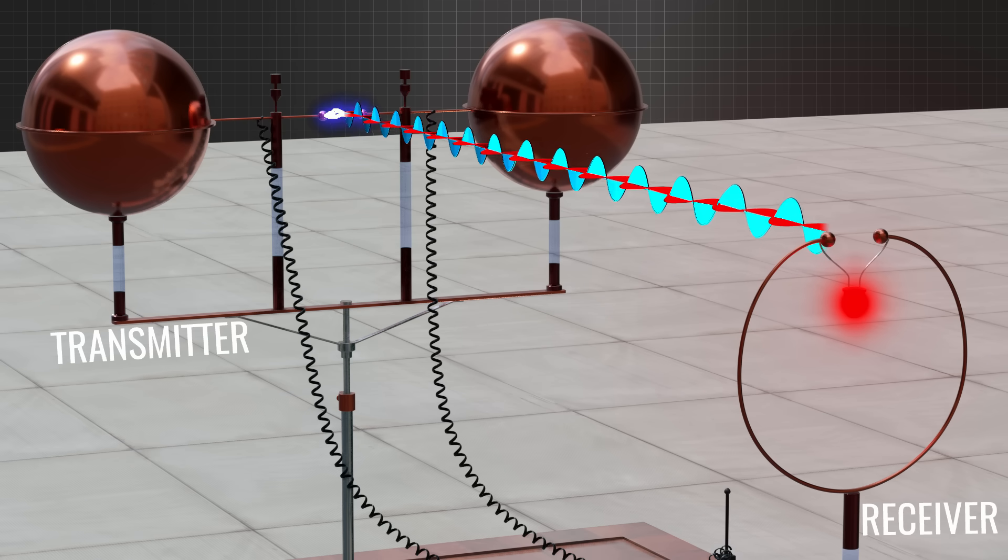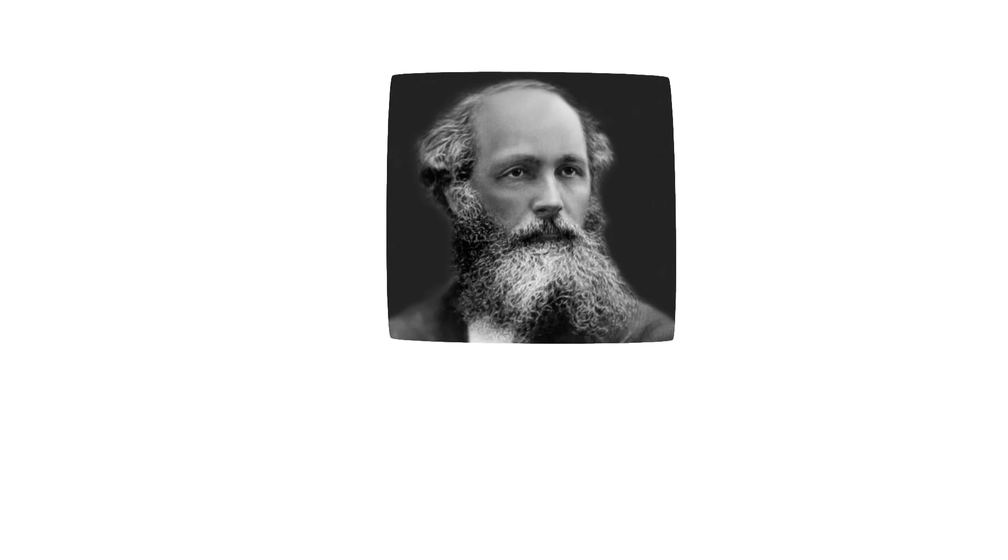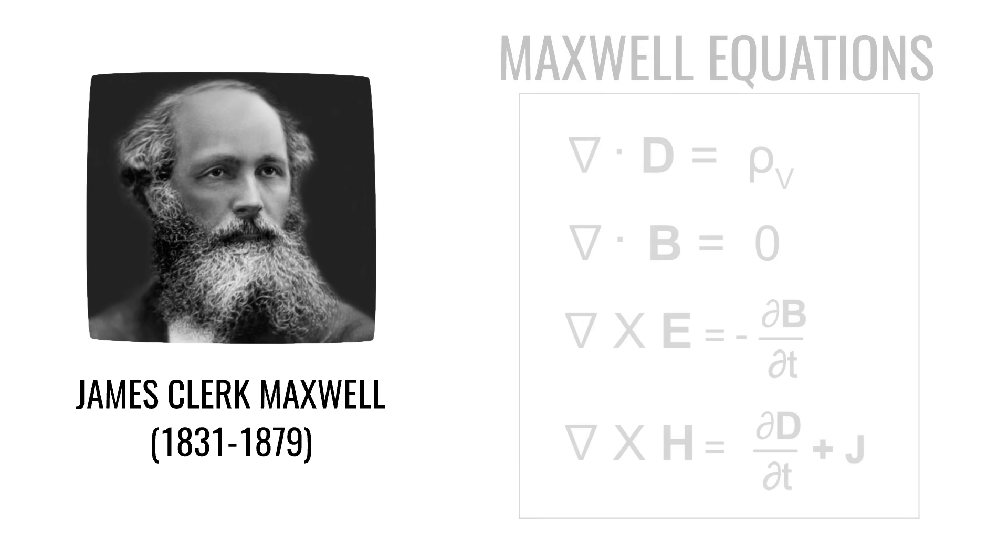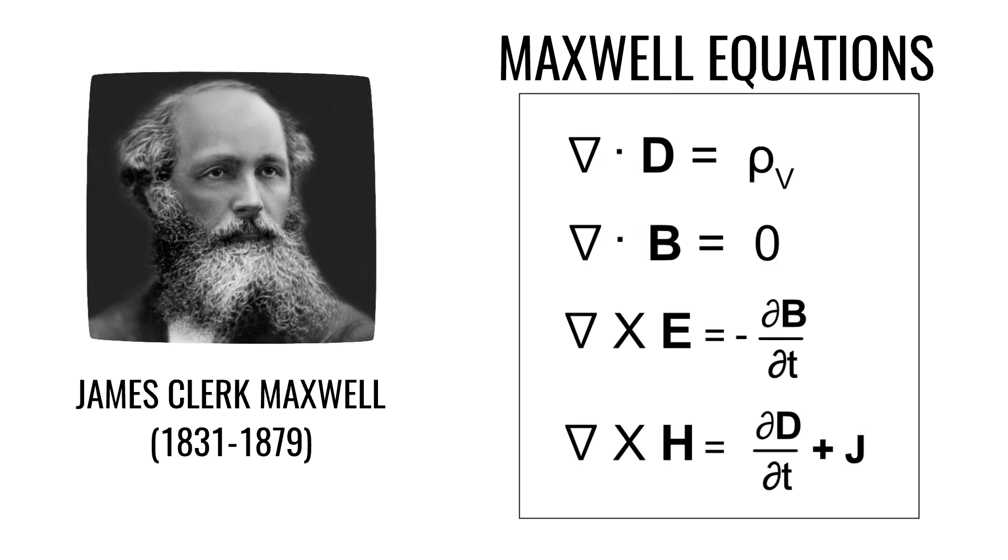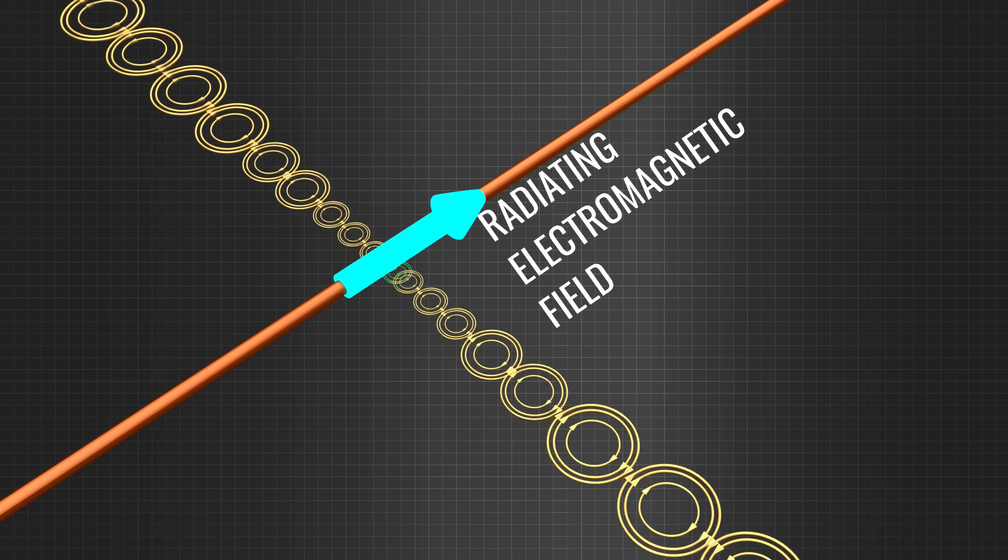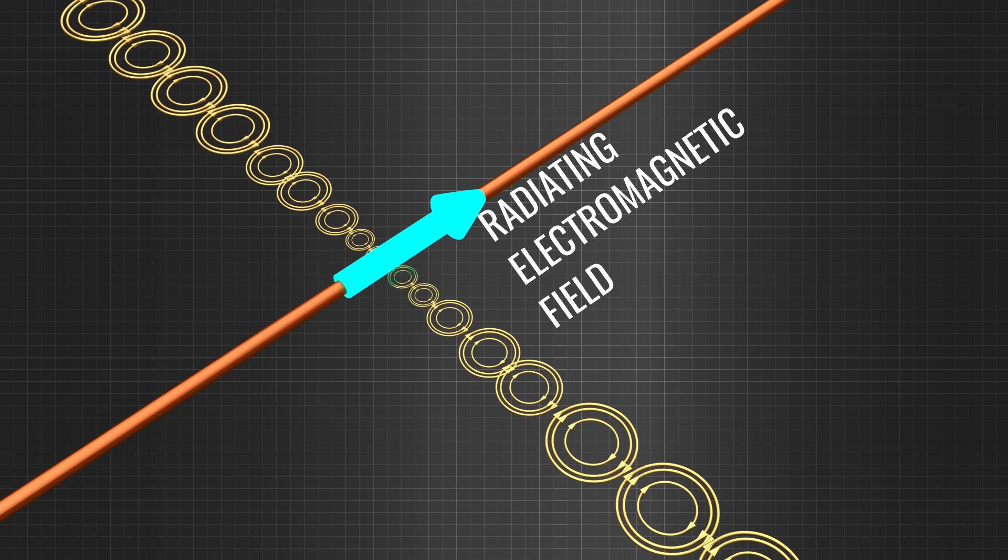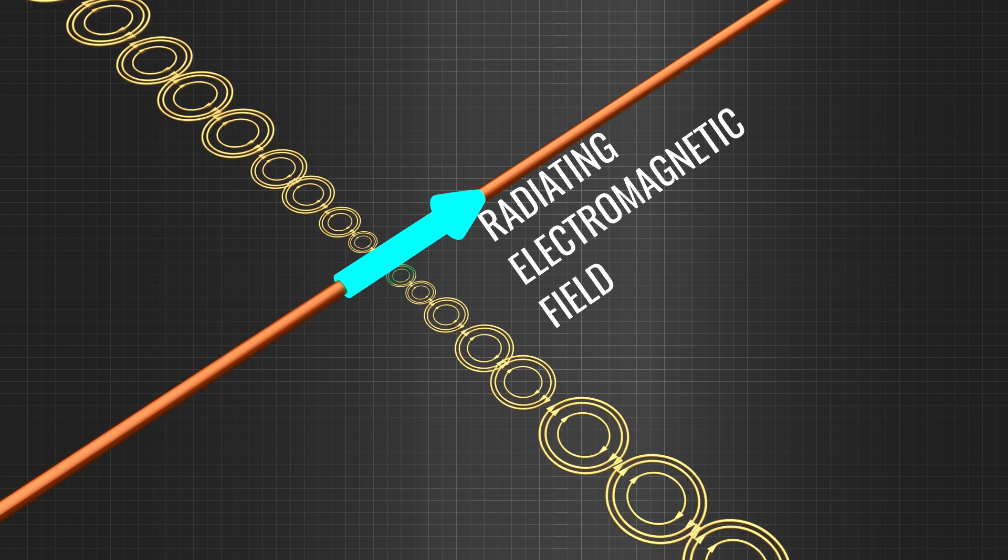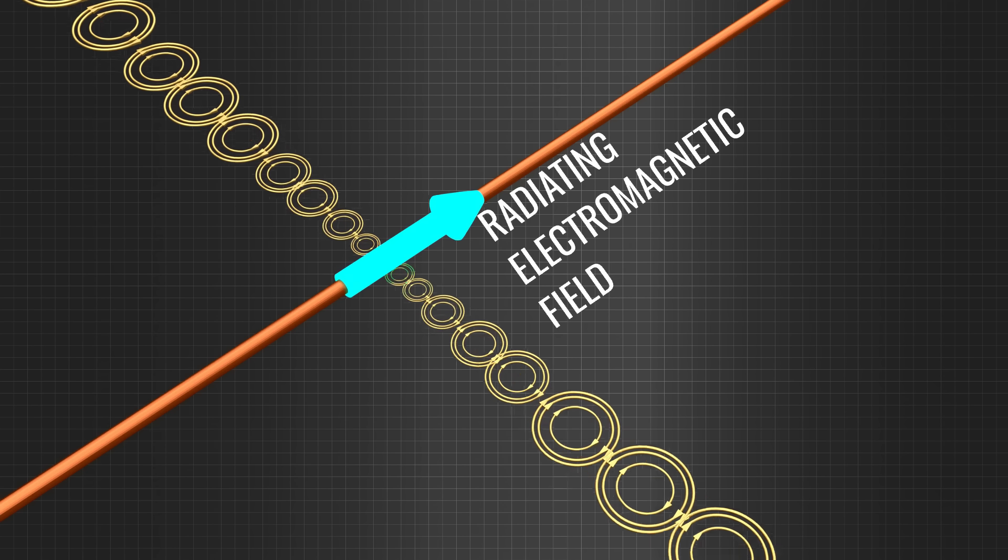However, before Hertz, the brilliant mathematician James Clerk Maxwell had already laid out the foundations for electromagnetic radiation by formulating four mathematical equations. However, these equations and the Hertz experiment raised a question. How do electromagnetic fields detach themselves from wires and propagate through space?